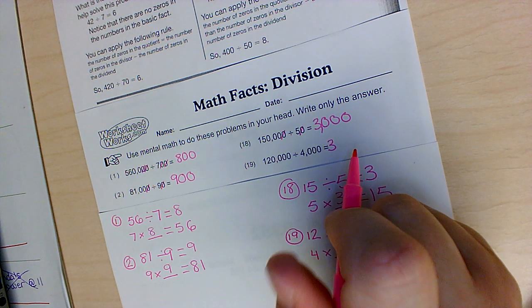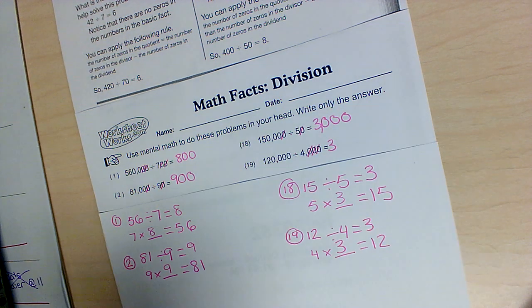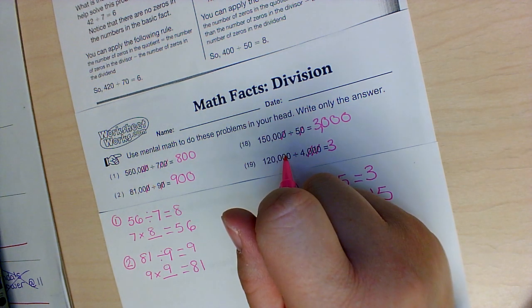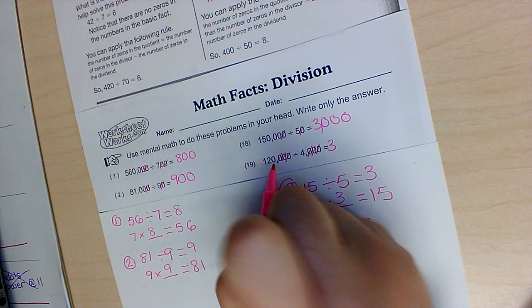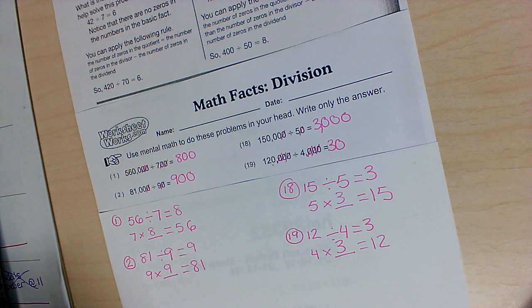I know it's going to start with 3 again. And I have 1, 2, 3 zeros in my dividend. And I have 1 left. So 120,000 divided by 4,000 equals 30.